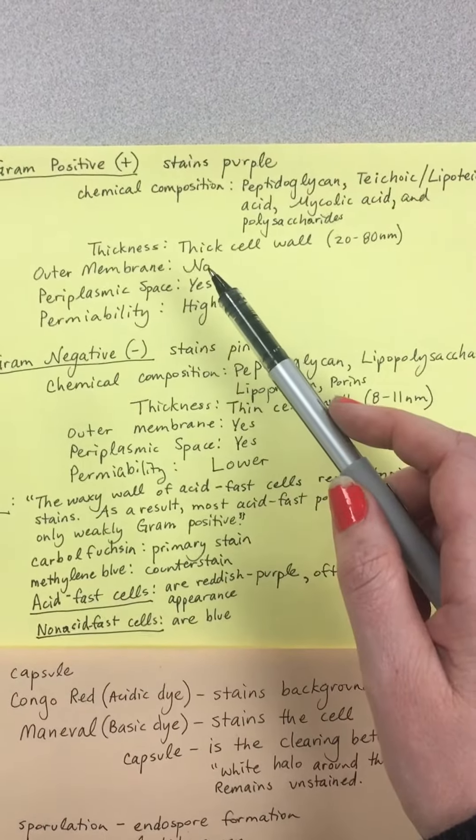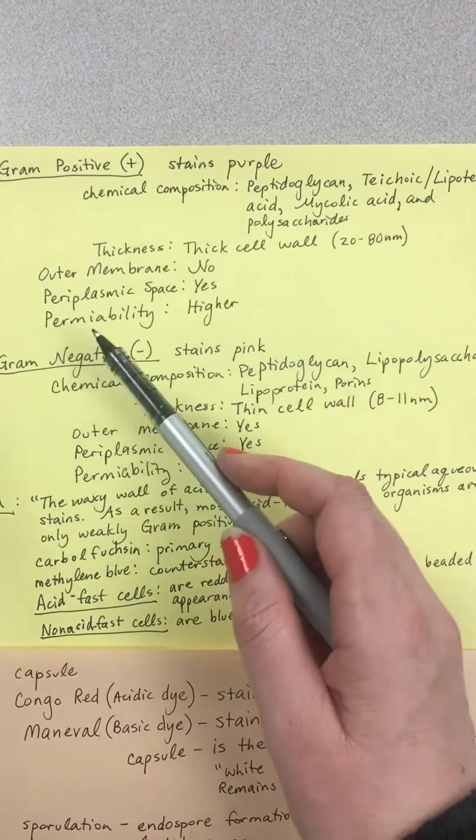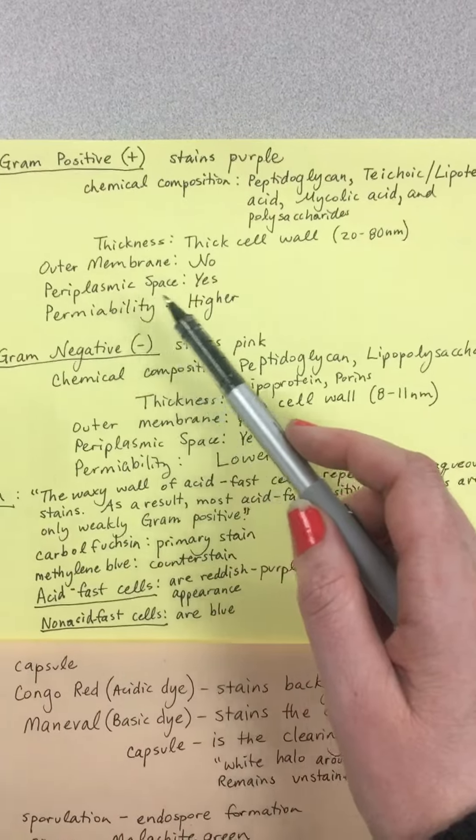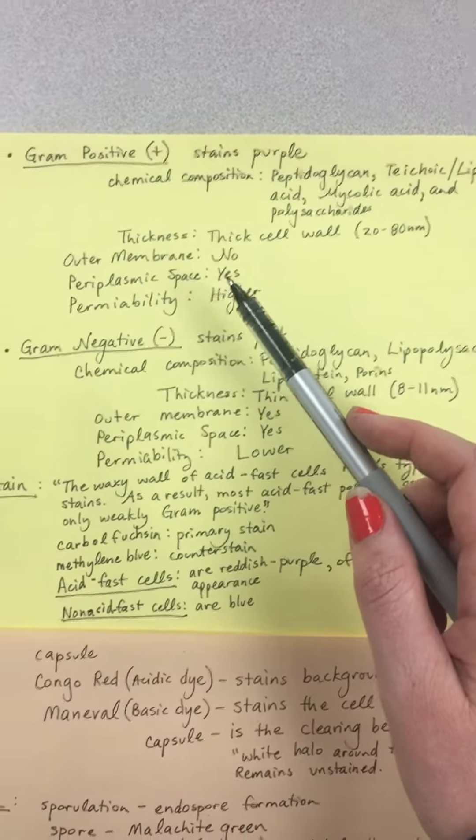It does not have an outer membrane, which means you have higher permeability. It does have a periplasmic space with those enzymes.